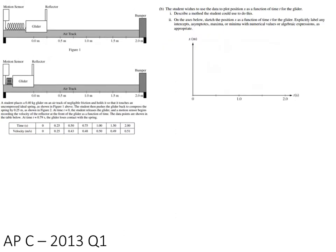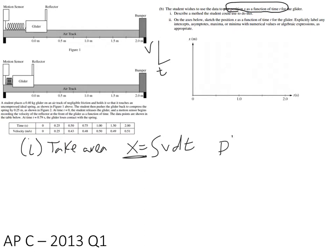Alright, starting off with part B, the easiest way to actually determine this - because they want to plot position as a function of time and we're given velocity versus time - the best way to do that is take area. Remember x is the integral of v dt, so the integral of velocity with respect to time is the position.